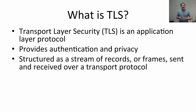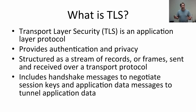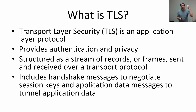TLS is structured as a stream of records with their own framing — a header, trailer, and a payload — and these records have their own type and are sent over a transport protocol such as TCP. There are handshake messages used at connection startup for TLS to negotiate session keys, which are ephemeral and not shared across connections. There are also application data messages carrying higher-level application data from HTTP, IMAP, or SMTP using TLS as a transport.